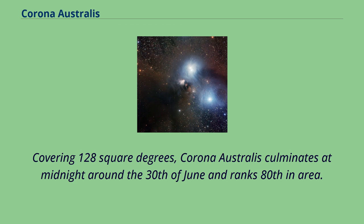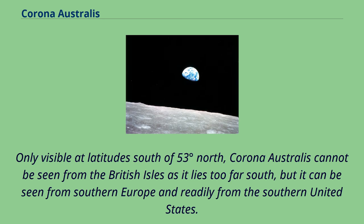Covering 128 square degrees, Corona Australis culminates at midnight around the 30th of June and ranks 80th in area. Only visible at latitudes south of 53 degrees north, Corona Australis cannot be seen from the British Isles as it lies too far south, but it can be seen from southern Europe and readily from the southern United States.